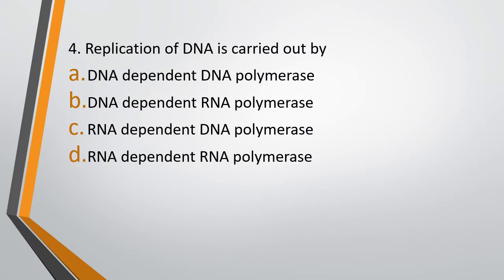Question number 4. Replication of DNA is carried out by: Option A, DNA dependent DNA polymerase; Option B, DNA dependent RNA polymerase; Option C, RNA dependent DNA polymerase. The correct answer is Option A — DNA dependent DNA polymerase carries out the replication.